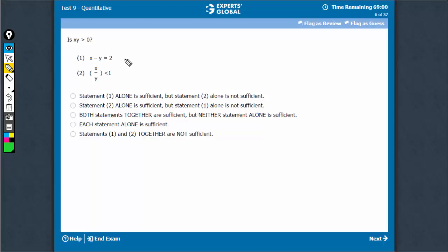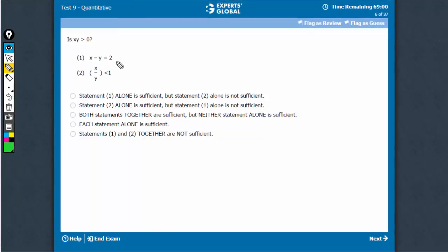The correct approach in such questions is to try to get a yes and no every time. So, for example, x minus y is equal to 2. If x is equal to 4 and y is equal to 2, then we get the answer as yes.